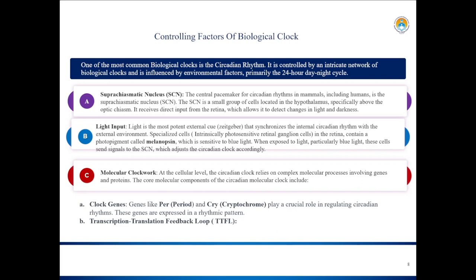Factors at molecular level which control the biological clock. Circadian rhythm, the most common biological clock, is controlled by an intricate network of molecular and cellular processes. The important factors governing circadian rhythms are suprachiasmatic nucleus, light, and molecular clockwork, of which suprachiasmatic nucleus is the central pacemaker of circadian rhythm.